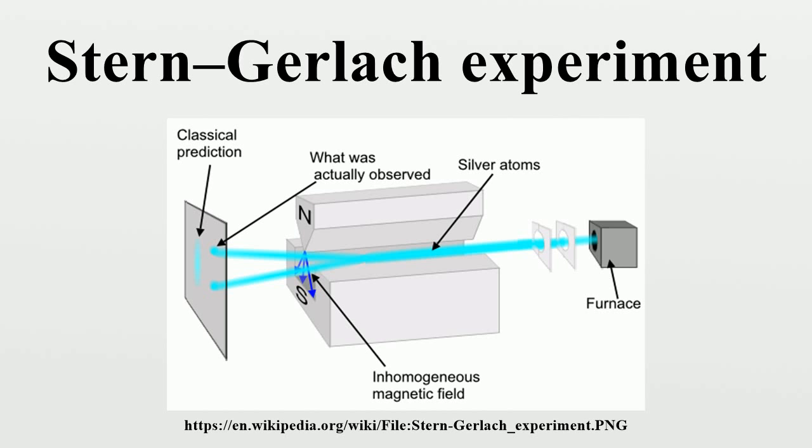Historically, this experiment was decisive in convincing physicists of the reality of angular momentum quantization in all atomic scale systems. The experiment was first conducted by the German physicists Otto Stern and Walther Gerlach in 1922.